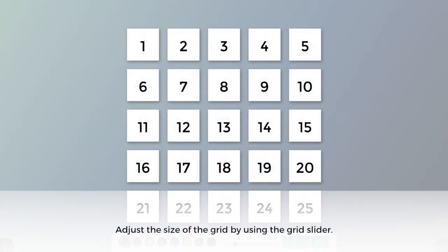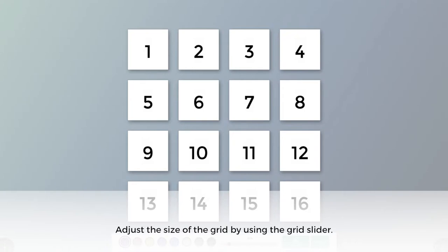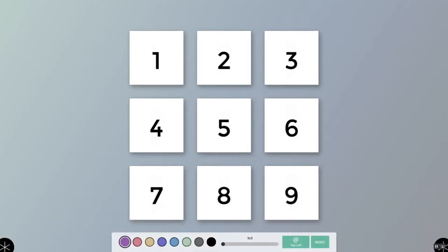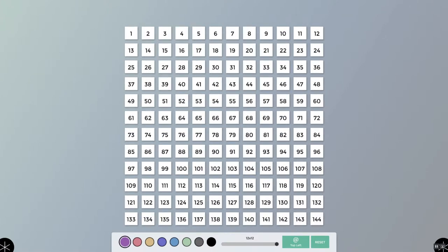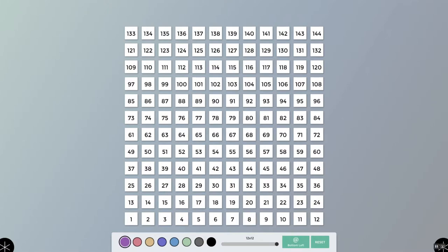The size of the grid can be adjusted by using the slider below the grid, making it good for demonstrating number patterns that are involved in multiplication or division. You can change the orientation of the numbers in the grid by selecting the green button located below the grid to the left of the reset button.